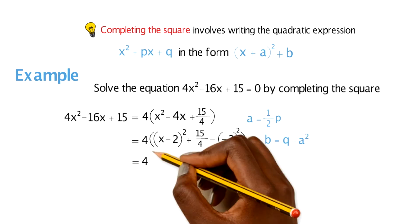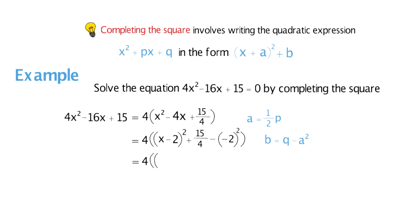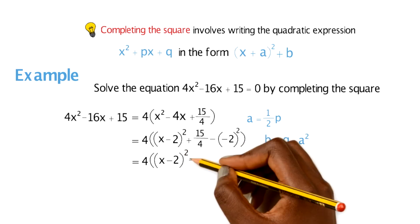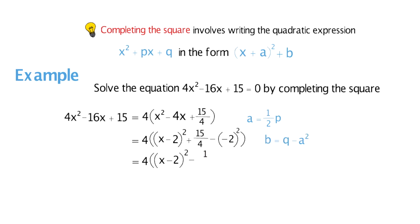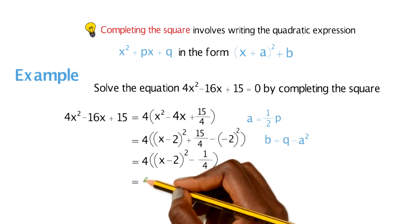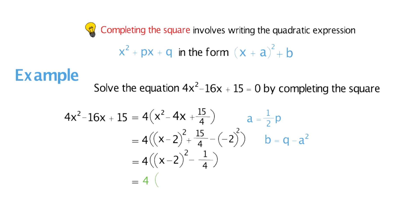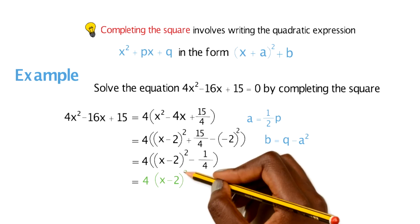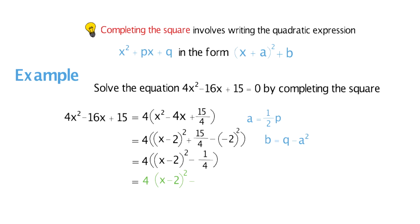Now all of this simplifies — we still have the 4 and the big brackets with x minus 2 squared inside. Then 15 over 4 take away minus 2 squared leaves us with minus 1 over 4. The last step is to multiply everything inside the big brackets by 4, leaving us with 4 times (x minus 2) squared, and on the outside minus a quarter times 4 gives minus 1. So minus 1 on the outside is your final answer.